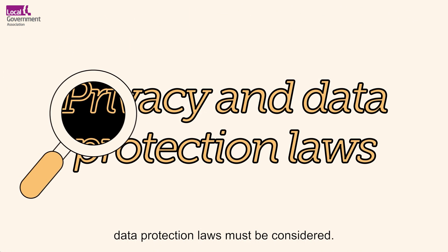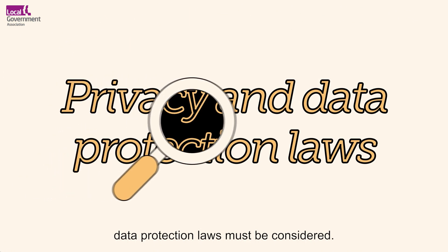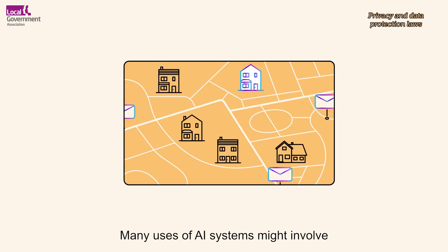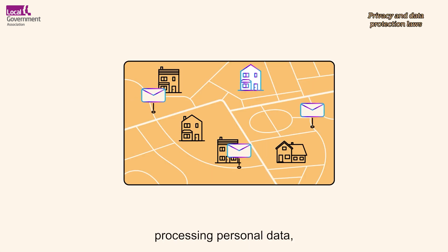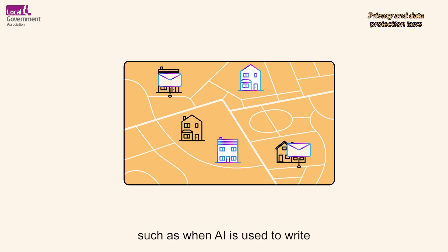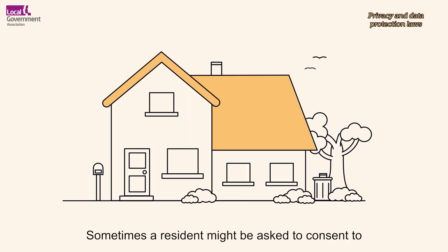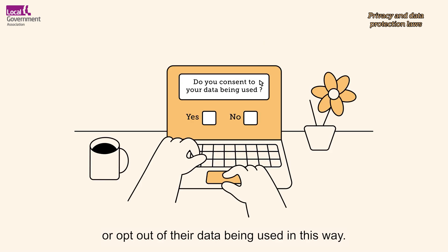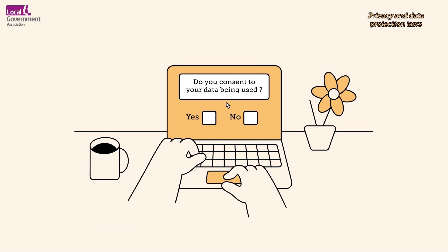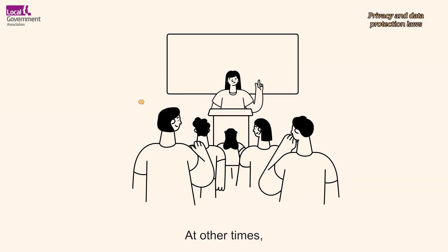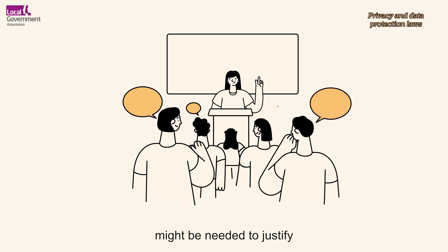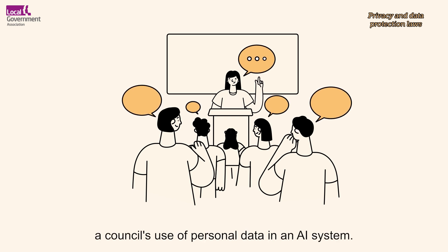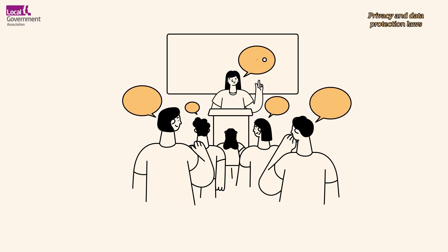Privacy and data protection laws must be considered. Many uses of AI systems might involve processing personal data, such as when AI is used to write tailored letters to residents. Sometimes a resident might be asked to consent to, or opt out of, their data being used in this way. At other times, a public consultation might be needed to justify a council's use of personal data in an AI system.